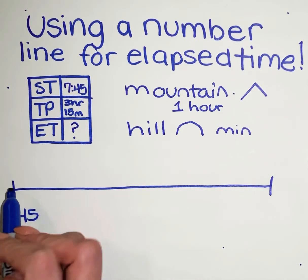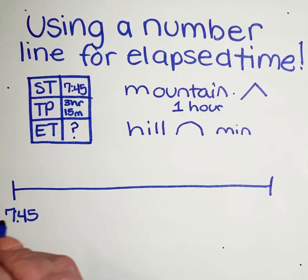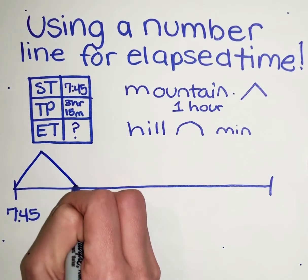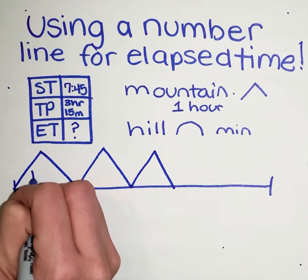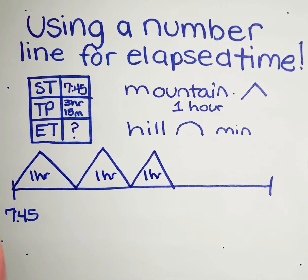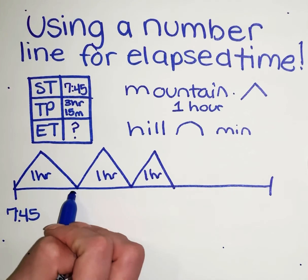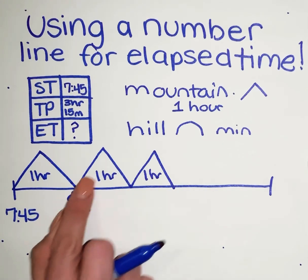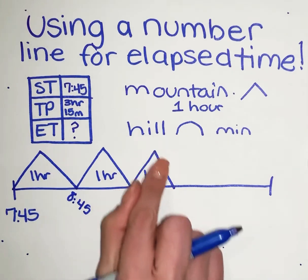Let's start at 7:45. Always start with the largest interval of time — those are your hours. So we're going to make three hour mountains: one, two, three. I like to label them just in case we forget — one, two, three hours. Starting at 7:45, we make three hour jumps, just changing the hour: 7:45, 8:45, 9:45, 10:45.